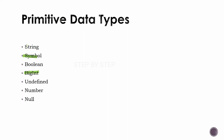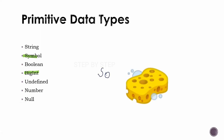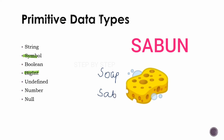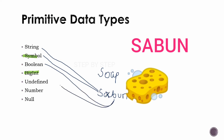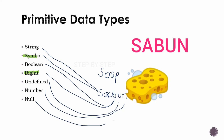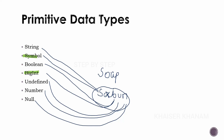Now it is very difficult to remember all seven data types. If you are aware of the word 'soap' — in Hindi, soap is called 'sabun' — you can just remember this word. From S we have string and symbol. A you can ignore for now. For B we have boolean and bigint. For U we have undefined. And for N we have number and null.